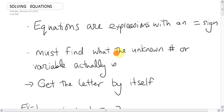You must find out what that unknown number is and the phrase that I'll keep saying over and over in this section is you want to try to get the letter by itself. We want to get the letters by itself, or as the fancy math term is, we want to isolate the variable.